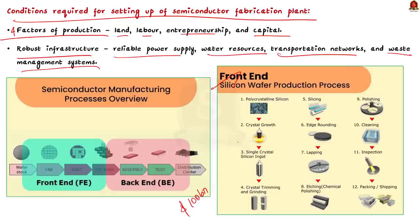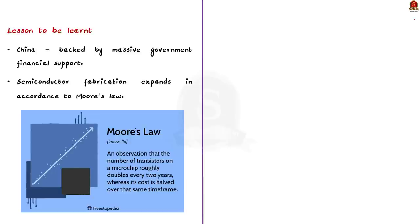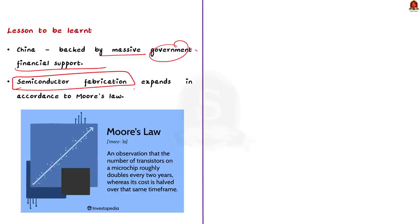Even though India made serious attempts since 2007 to establish a semiconductor fabrication plant, it could not succeed in its vision. The author asks India to learn from China. China started late in the semiconductor fabrication industry but was backed by massive financial support from the government over the past two decades. Semiconductor fabrication represents the limits of human technological advancement, which further expands in accordance with Moore's law — the number of transistors on a microchip doubles every two years, meaning the speed and capability of computers increases every two years, but this progress is accompanied by higher complexity and costs.